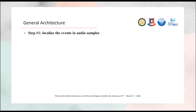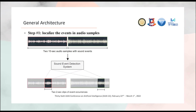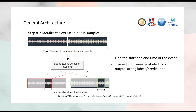The first step of our model is to localize events in audio samples. We have two 10-second audio samples with sound events. We feed them into the sound event detection system, which outputs two clips of two seconds. These two-second clips are event occurrences localized by the SED system. We need to do this because the original 10-second audio samples may contain only a short piece of the event, so we need a system to find the start and end time. Training with this localized data gives more correct results than training directly with the original 10-second samples.